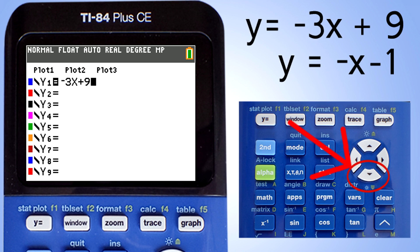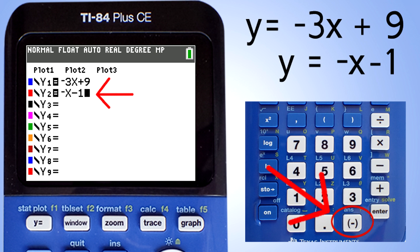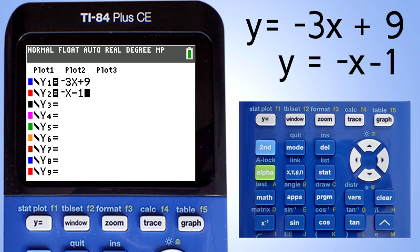Now press the down arrow key so we can enter the second equation. Let's enter the second equation here, y equals negative x minus 1. Remember to use the negative sign here for the negative x. Now we are ready to graph these equations.